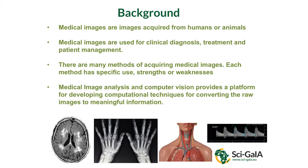There are different ways of acquiring images. X-ray is an example, ultrasound is an example, MRI is an example. Each of these is specific to the anatomy you want to look at, and they have strengths depending on the tissue you are trying to image.